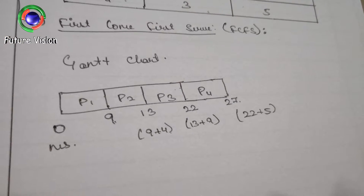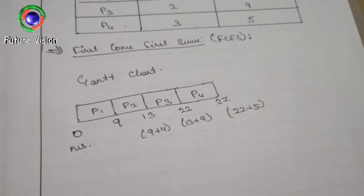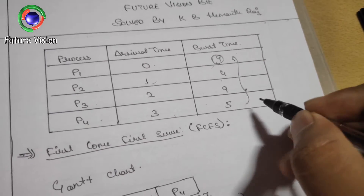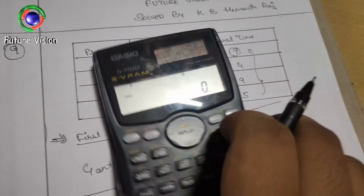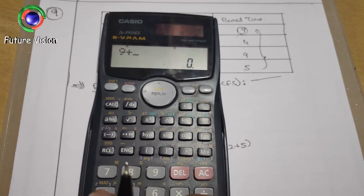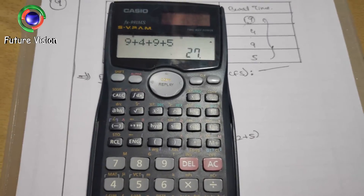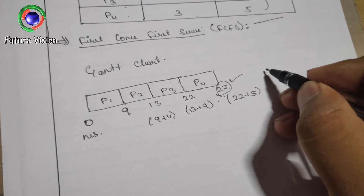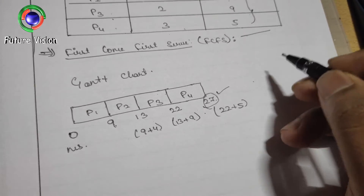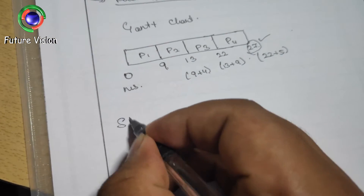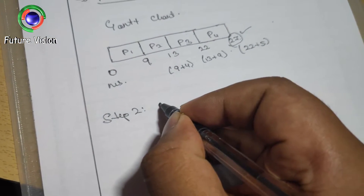Now our Gantt chart is ready. To check whether we have drawn it correctly, we sum all the burst times: 9 plus 4 plus 9 plus 5 equals 27. Our Gantt chart totals 27, so we have not encountered any error while drawing it. The second step is to calculate the average waiting time.